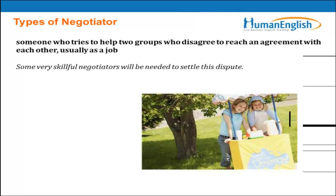It's also important to know the type of negotiator. A negotiator is a person — someone who tries to help two groups who disagree to reach an agreement with each other. It's usually a job. The person has to be skillful. For example: 'Some very skillful negotiator will be needed to settle this dispute.'